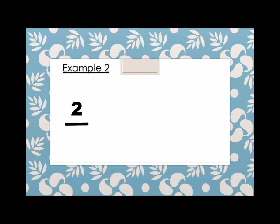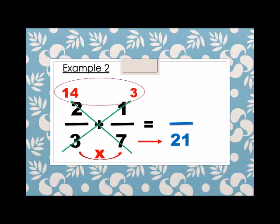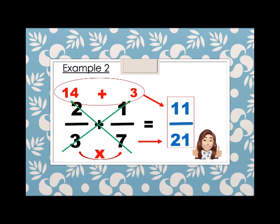Example number 2. We have 2 over 3 plus 1 over 7. Again, different denominator. So what do we do? We multiply the denominators. We have the denominator 21. So the denominator of the answer is 21. We solve for the numerator: 3 times 1 is 3, and 7 times 2 is 14. Having these numbers, we simply add the numerator, which is 14 plus 3. We have 17. Therefore, 2 over 3 plus 1 over 7 is equals to 17 over 21.